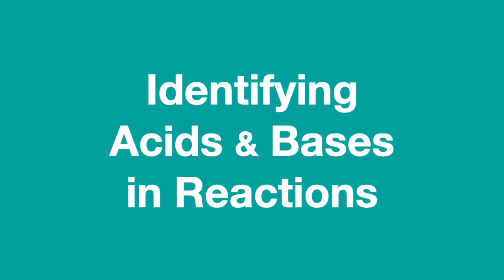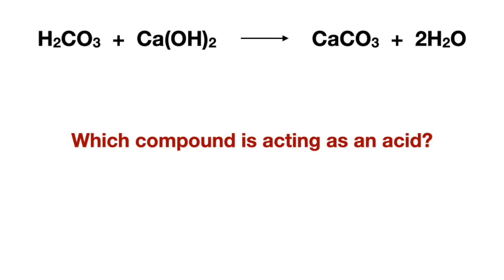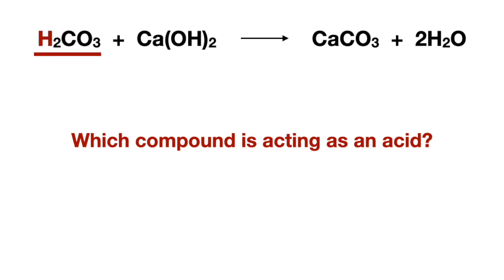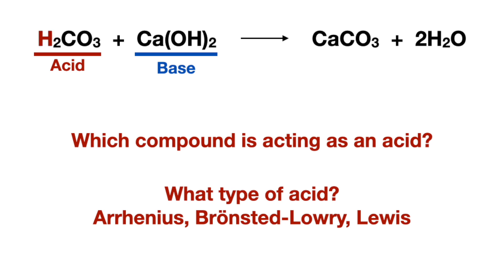Now let's identify acids and bases in an example. When asked which compound is acting as an acid — acting as means it has to come from the reactants — the reactant on the left has a hydrogen that it can donate as a proton, making it the acid, and the other reactant is the base. When asked what type of acid — Arrhenius, Bronsted-Lowry, or Lewis — the acid is a proton donor, so it cannot be Lewis. And the base is a hydroxide donor, so it cannot be Bronsted-Lowry. Plus, there is water in the products, making it an Arrhenius acid.